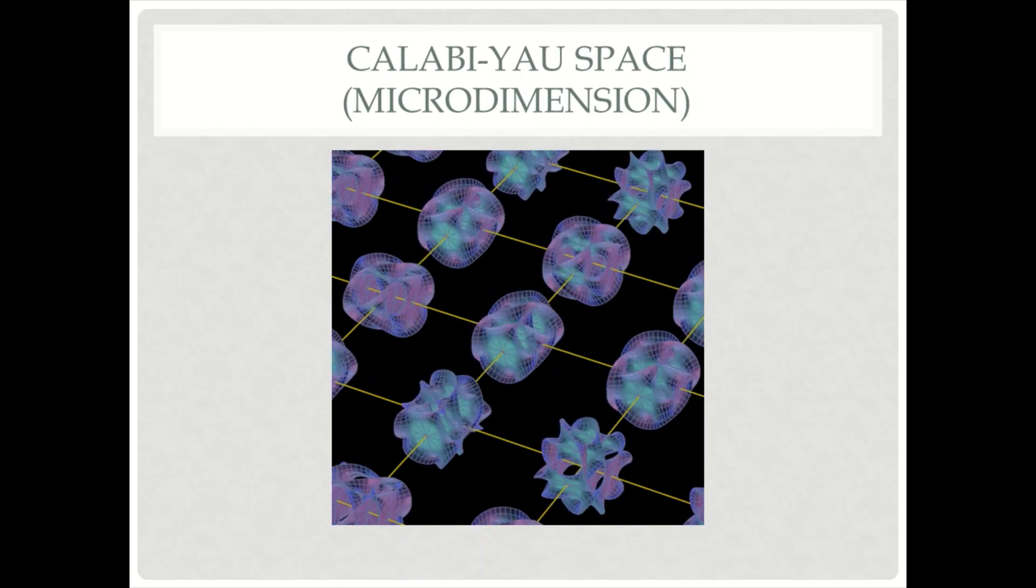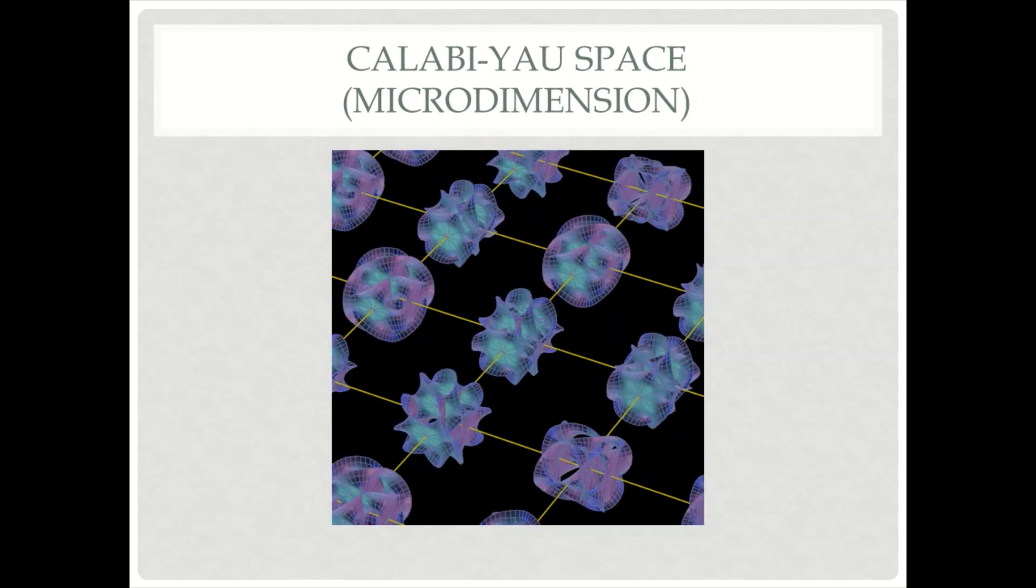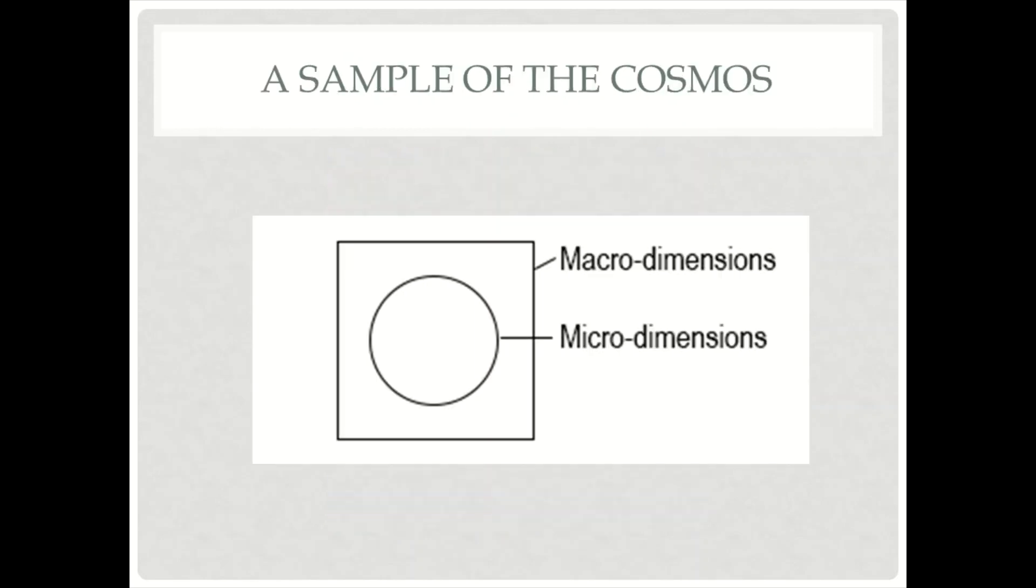In quantum mechanics, entanglement occurs when two particles evolve as one object, even though they may be separated in space. So, taking an arbitrarily small sample of the universe, we find that micro dimensions are surrounded by a negative space, the so-called macro dimensions. In our example, one side of the coin refers to the micro dimensions and the other side of the coin is space.